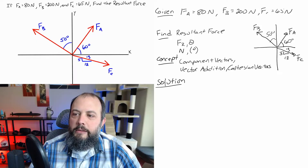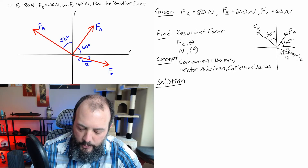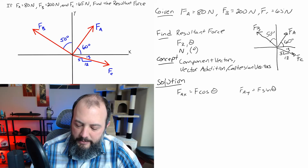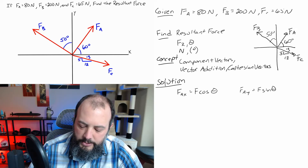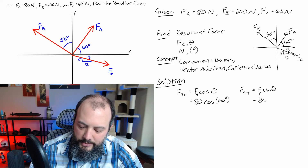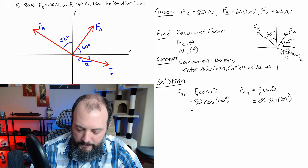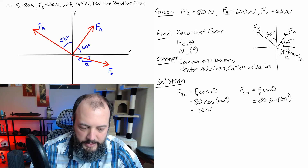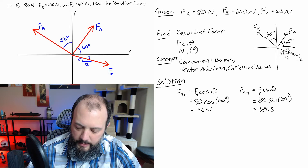I'll start with F_A, which is the easy, straightforward, basic one. So F_Ax is going to be F_A cosine theta, and in the y direction F_A sine theta. Since F_A is 80 newtons: 80 newtons cosine 60 degrees gives 40 newtons, and 80 newtons sine 60 degrees gives 69.3 newtons.